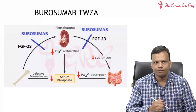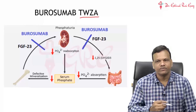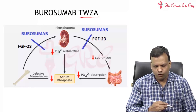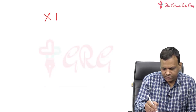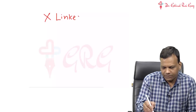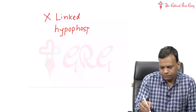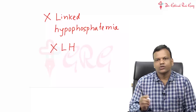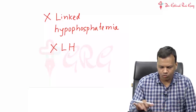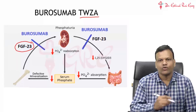Moving to the next one, the drug is Burosumab — the four letters T, W, Z, A have no meaning. Before going to the drug, we will discuss a condition known as X-linked hypophosphatemia, simply XLH. This is a genetic condition in which there is overactivity of a compound called fibroblast growth factor 23.